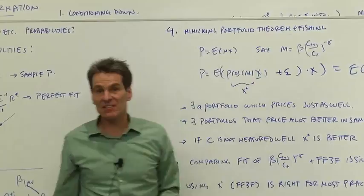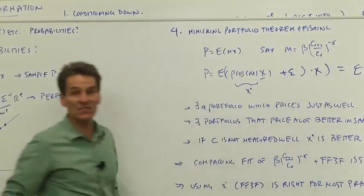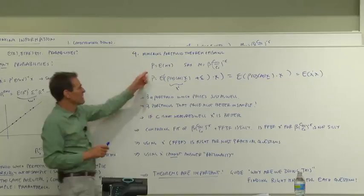Suppose you have a pricing model. In fact, suppose that the consumption pricing model worked perfectly. So price is expected discounted payoffs using consumption growth to the minus gamma.